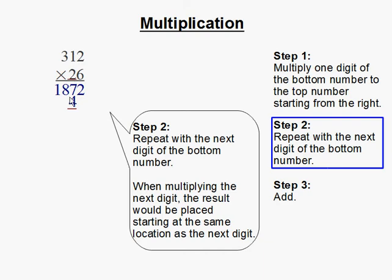So 2 times 2 is 4. 2 times 1 is 2. And 2 times 3 is 6.